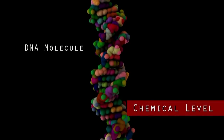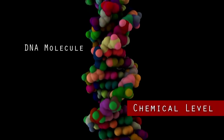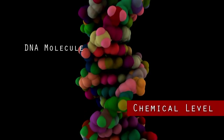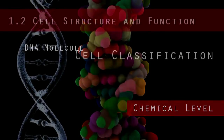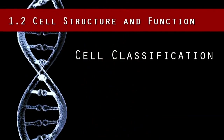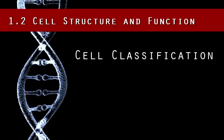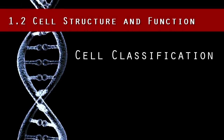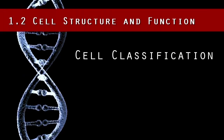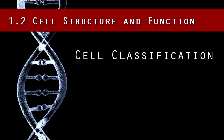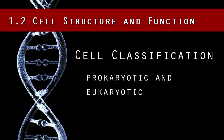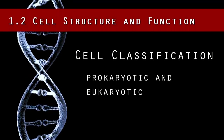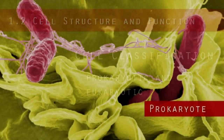Finally, cells contain organelles and molecules, such as DNA. Let's examine a cell more closely. There are two general classifications of cells: prokaryotic cells and eukaryotic cells.